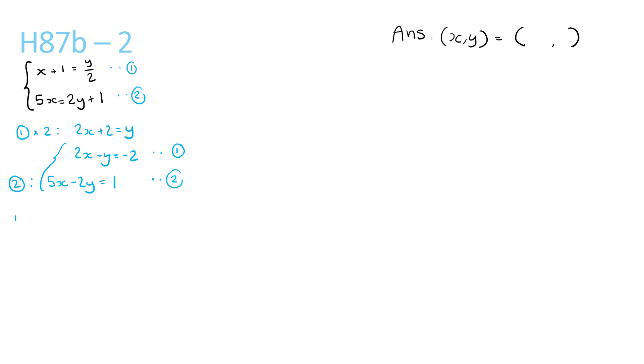If we do this, we will get 4x minus 2y equals negative 4. The minus 2y is the most important part, because it's the same as this here.